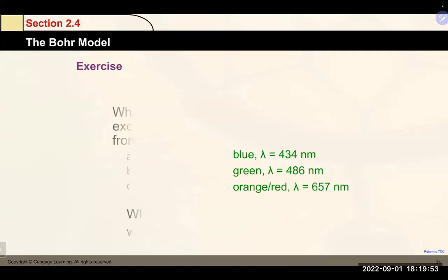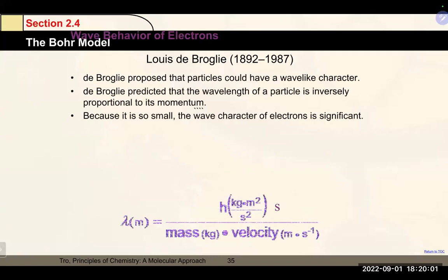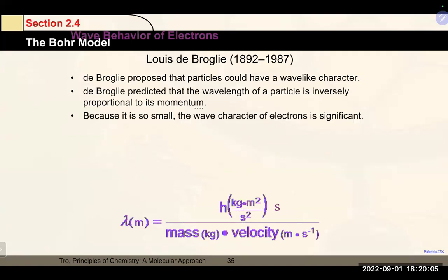Another important concept moving us away from Bohr's planetary model is de Broglie's work. De Broglie didn't do experiments — he just thought about it and wrote about it, and he was right when others later tested it. The de Broglie wavelength proposes that particles like electrons can have wave-like functions, and just as waves can have particle-like functions. Because electrons are very small, their wave character is significant. The de Broglie wavelength equation is λ = h / (m × v).